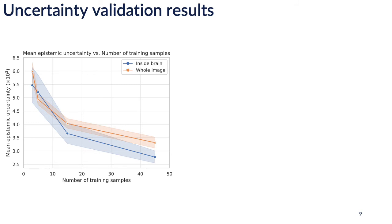To show that we capture epistemic uncertainty — the quantity associated with model knowledge — we trained four networks with 3, 5, 15, and 45 datasets until the validation loss plateaued. The remaining five healthy images are used for testing, over which the epistemic uncertainty is calculated. The blue line shows the mean epistemic uncertainty over the brain region for all held-out images. We expect epistemic uncertainty to decrease as the training dataset size increases, which is what is shown. This demonstrates that our epistemic uncertainty quantity corresponds with its definition, since it decreases as the model sees more examples.